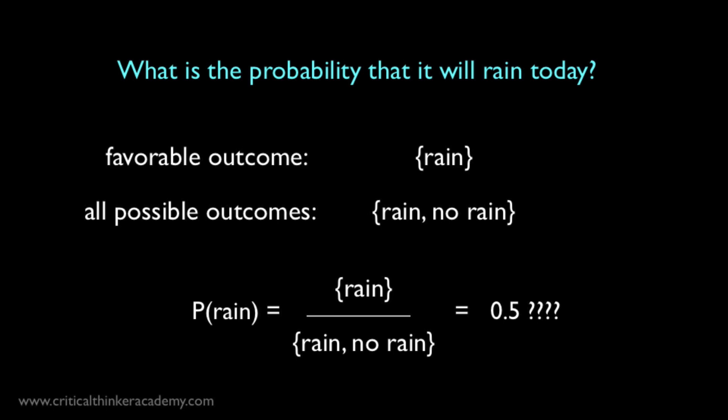Consider, for example, how we might use this interpretation to assign a probability value to the question, what are the odds that it's going to rain today? Okay, what's the favorable outcome? It rains. What's the set of possible alternative outcomes? It rains or it doesn't. But if we're forced to assign equal probabilities to each outcome in order to use the classical definition, as the principle of indifference suggests, and these are the two elementary outcomes, then the probability of it raining is always going to be one-half according to this definition. That makes no sense. Something's clearly not right.